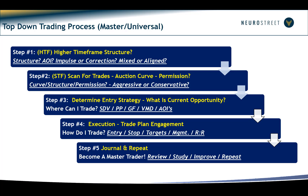Once we've established the higher time frame structure, we go down into the lower time frames and look at a tool called the curve and structure to see where we have permission to take either long or short trades. That establishes whether we're taking aggressive or conservative trades. We then look at how we can get in using one of the tools — whether that's the SD volume zones, the print profile, the golden FIPs, or an area of interest.